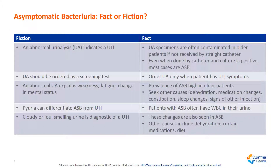Next we'll review some myths and facts regarding asymptomatic bacteria. The first myth is that an abnormal UA or urinalysis indicates a UTI. The fact is that UA specimens are often contaminated in the older population if they're not received by straight cath. And even when they are done by straight cath and the culture comes back positive, most of these cases can be determined to be asymptomatic bacteria.